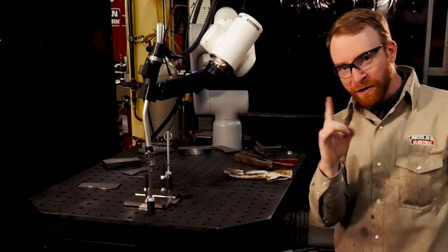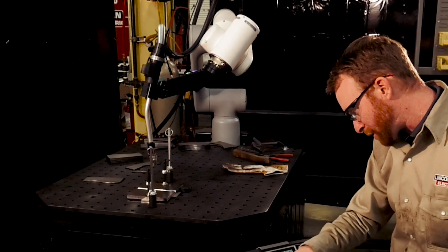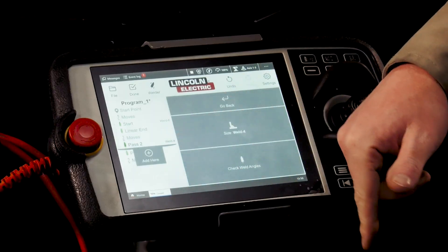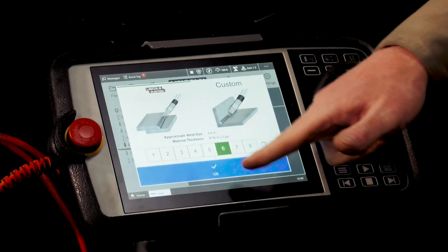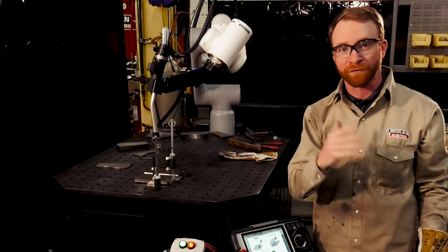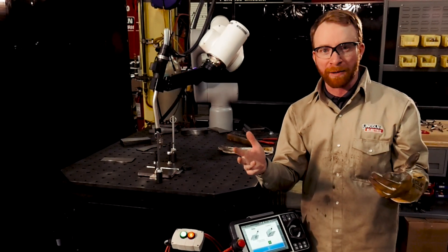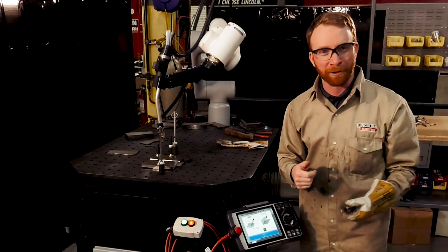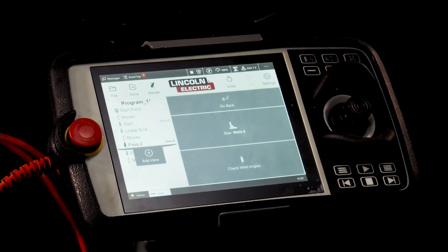Now I'm going to want to do a weave in between those points. That way I get better penetration. So I'm going to change my weld. Edit weld, go to my weld by numbers, and I'm going to go over to a six. Anything above four, so five, six, seven, eight, will all automatically have a weave. You can also set up your own custom weld depending on the application. So I'm going to use a six weld here. Press OK.